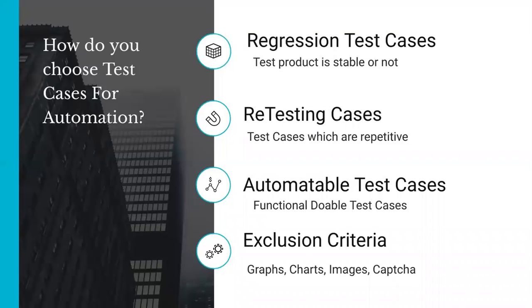So these are all the criteria you should tell, and this is the way you should answer. First, take regression, then retesting, then define what test cases you feel are eligible for automation. And also define the exclusion criteria — what is not eligible for automation.